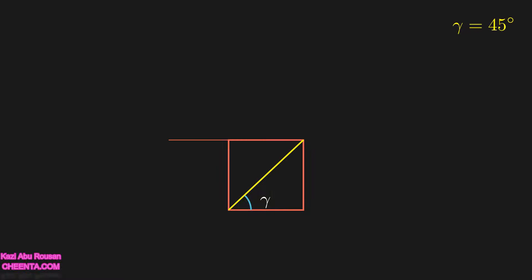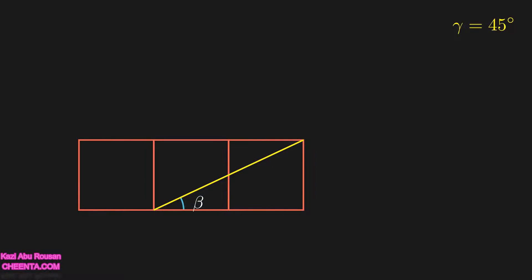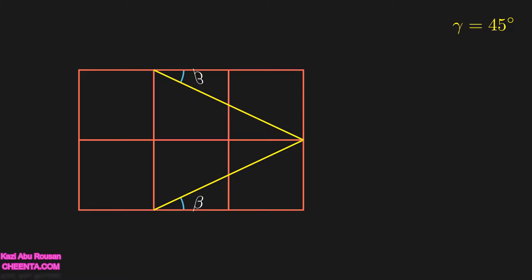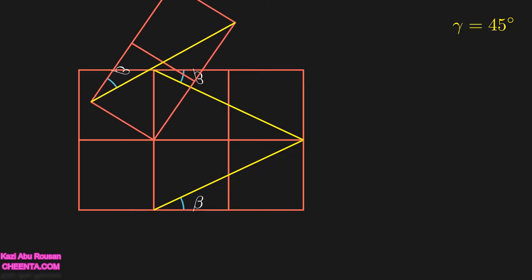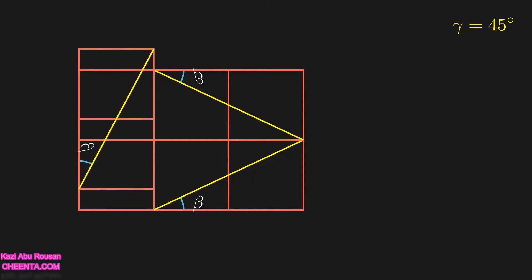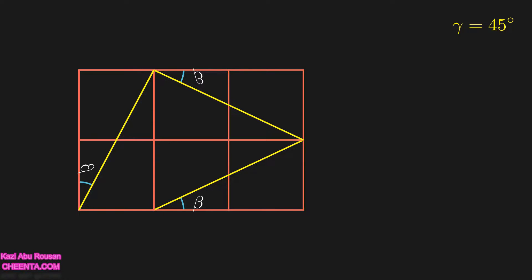Now let's draw the remaining diagram. To find the value of beta, I will construct a special configuration: I will reflect the whole system with respect to the upper line, so that particular angle is beta. Then I will rotate and slide it to reach this particular diagram. I have marked the angles which are already known. For that particular triangle, there is a 90-degree angle, so that angle must be 90 degrees minus beta.